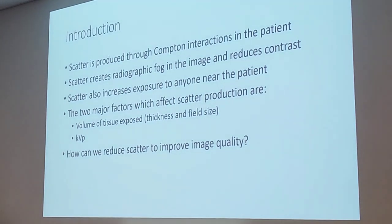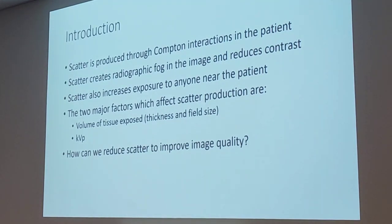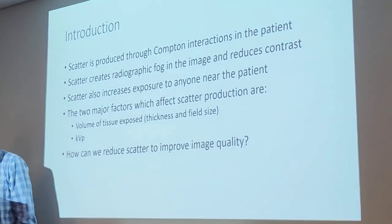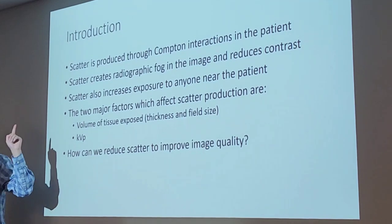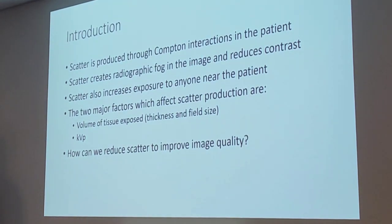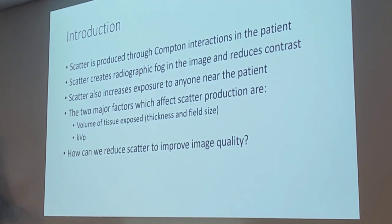So, Chapter 12 — we are going to be talking about scatter control, coming back to our good old friend scatter. We talked about scatter back in PRE1. What kind of interaction created scatter? Compton — that is our main source of scatter. There was a second source: classical Thompson scattering. That one is not a major player in x-ray mainly because it happens at low energy levels, and we filter out those low energy photons, so we don't have much classical scattering. Most of our scatter is from Compton.